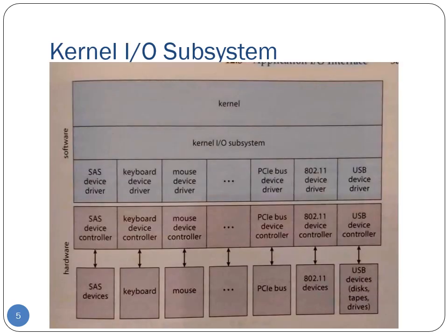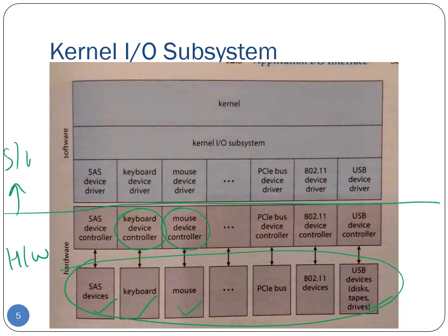That was the hardware view of I/O devices. Here is the operating system's view of how it sees the I/O devices. The boxes at the very bottom are the actual devices connected to the machine — for instance, keyboard, mouse, USB devices, hard disk, and so on. Each device is connected to a controller: the keyboard has a keyboard controller, the mouse has a mouse device controller, and so on.